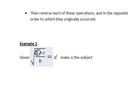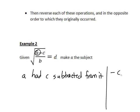The first thing that happened was a had c subtracted from it. So let's write down that first part of the story of what happened. That basically means we had minus c.